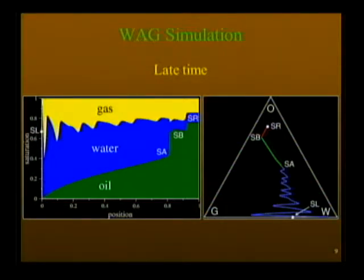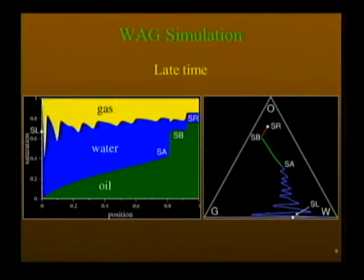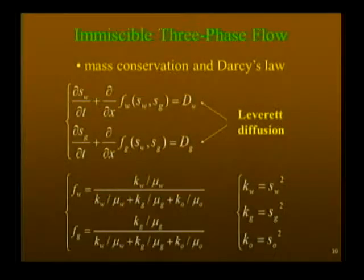Superimposed in the horizontal variation direction are fast waves of water and gas propagating on a slow rarefaction wave. There are two additional waves: one leading from S_A to a middle state S_B, and another from S_B to S_R. This is a new feature — normally in two conservation laws you have a fast and a slow wave, but now we have a third type: a transitional or undercompressive wave. The states ahead and behind this wave are sensitive to the diffusion terms induced by capillary pressure.